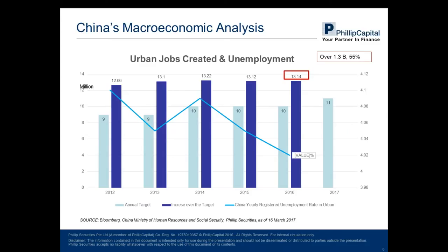Another economic indicator that people are most concerned about is the unemployment rate. China has over 1.3 billion people and nearly 50.45% from the urban areas. According to statistics, a total of 30.42 million new urban jobs were added over the course of the year, and the registered unemployment rate stood at 4.02% at the year end, which is the lowest level in years.